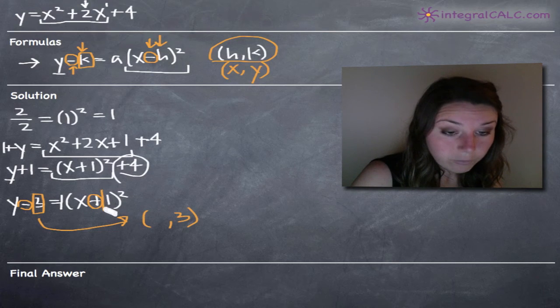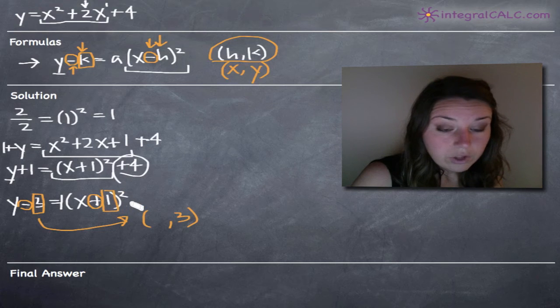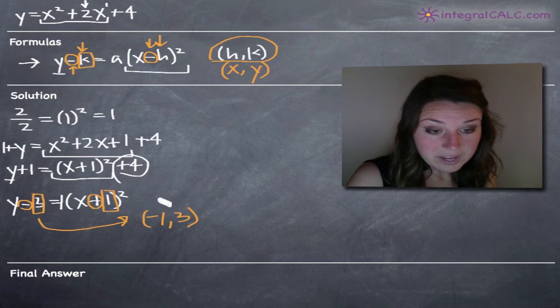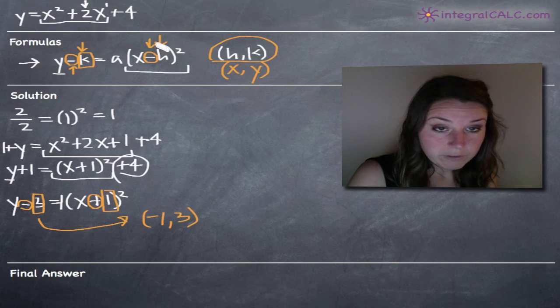But when we have a positive sign right here and a negative sign in our formula, that means that instead of just pulling out one, we have to pull out negative one. Our x coordinate here has to be negative one in order for this formula to be true.